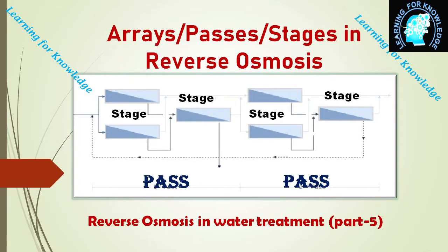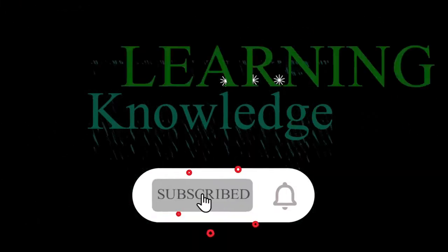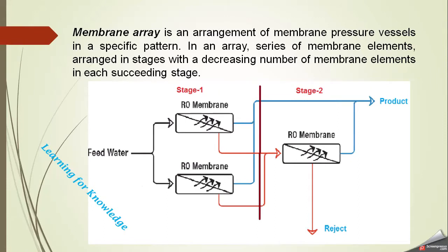Welcome to the Learning for Knowledge channel. Today we will discuss another important aspect of reverse osmosis: the difference between arrays, passes, and stages used in reverse osmosis plants. These terms are very important to understand because some people confuse pass and stages. In previous videos we explained different terms in reverse osmosis, membrane materials, and module configurations. Today we will explain arrays, stages, and passes. A membrane array is an arrangement of membrane pressure vessels in a specific pattern.